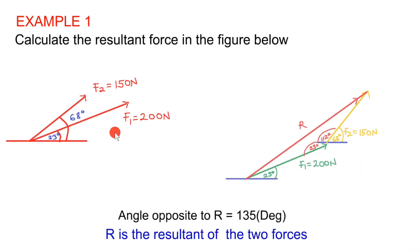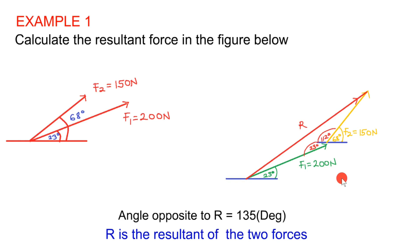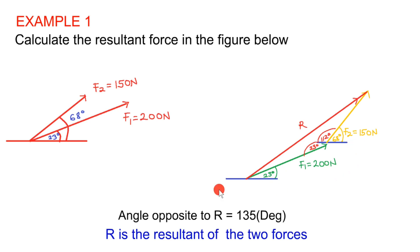To apply the force triangle approach, we redraw these forces as a triangle. On the right-hand side, I've drawn a triangle using the two forces and their resultant. F1 and F2 are drawn with their respective angles of 23 degrees and 68 degrees with the horizontal line, and R is the resultant of these two forces.